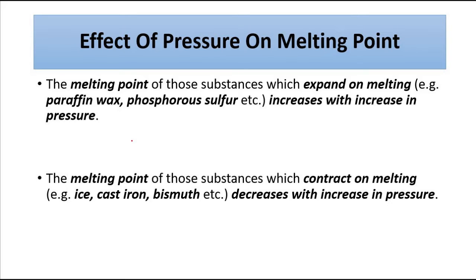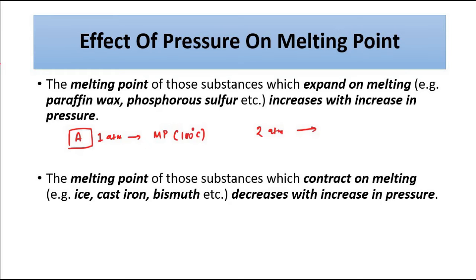Let's take a hypothetical substance A which falls in the first category — it expands on melting. At normal atmospheric pressure, its melting point is 100°C. If we increase the pressure to 2 atmospheric pressure, its melting point will increase because it follows this rule. So the new melting point at 2 atmospheric pressure becomes, say, 110°C. The condition is that this substance expands on melting.